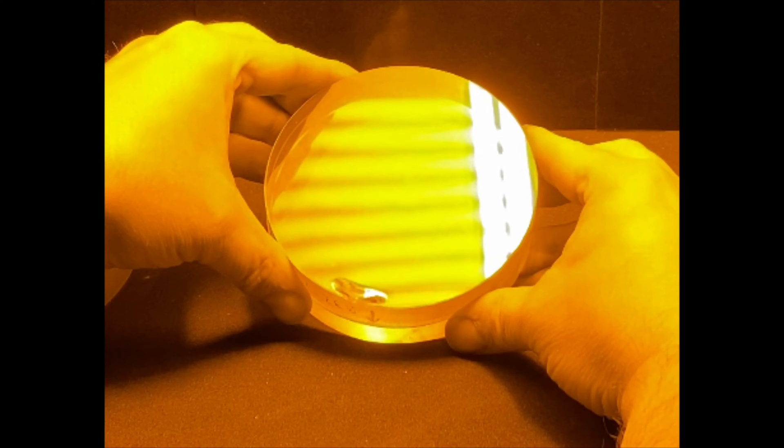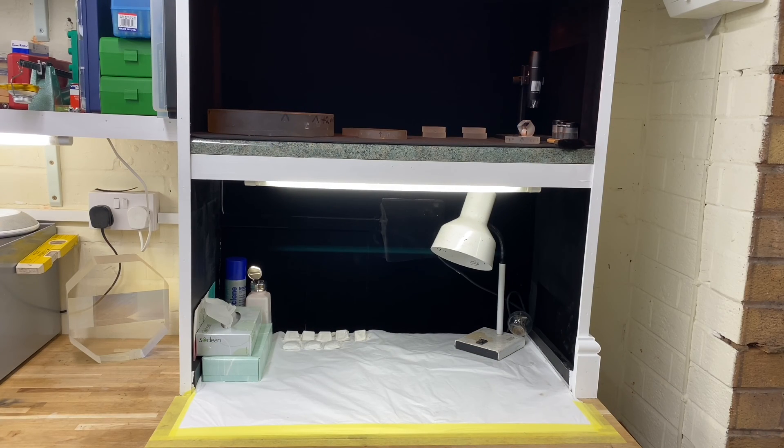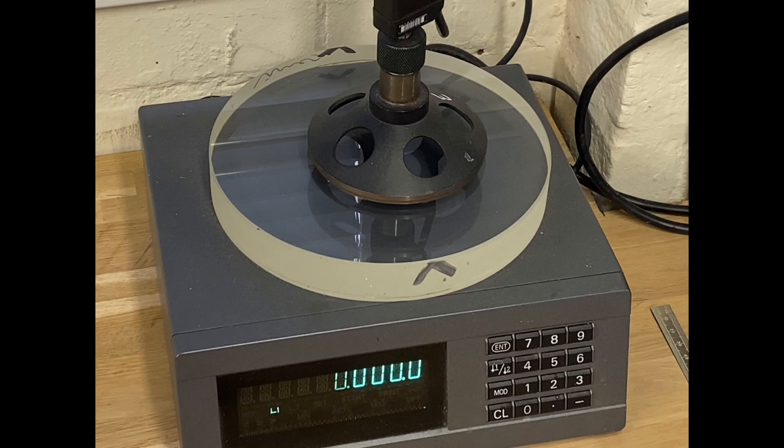This method of measuring with flats uses Newton's rings or fringes to measure the flatness of the surface. Here's a picture of what those fringes might look like.